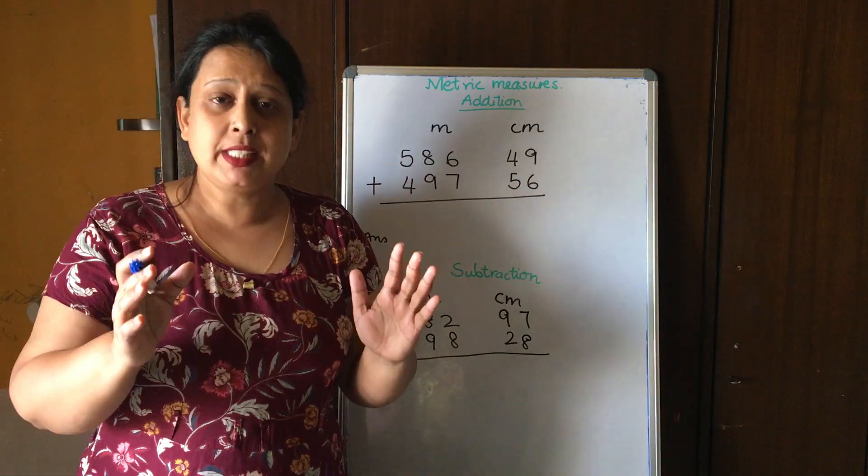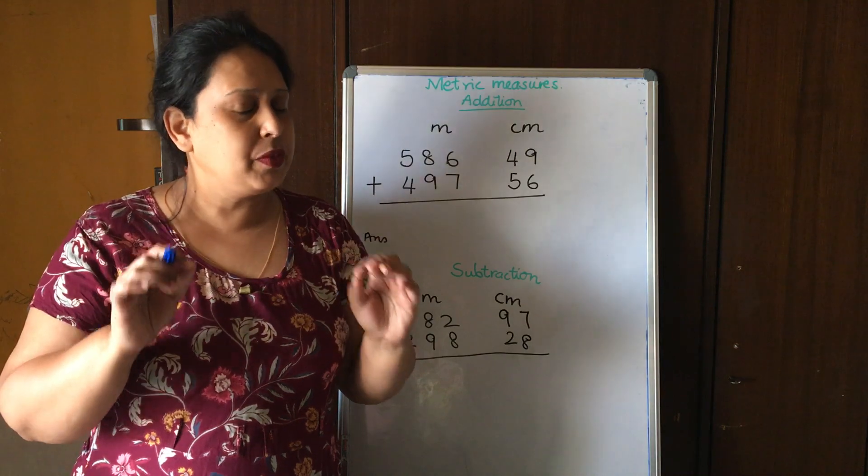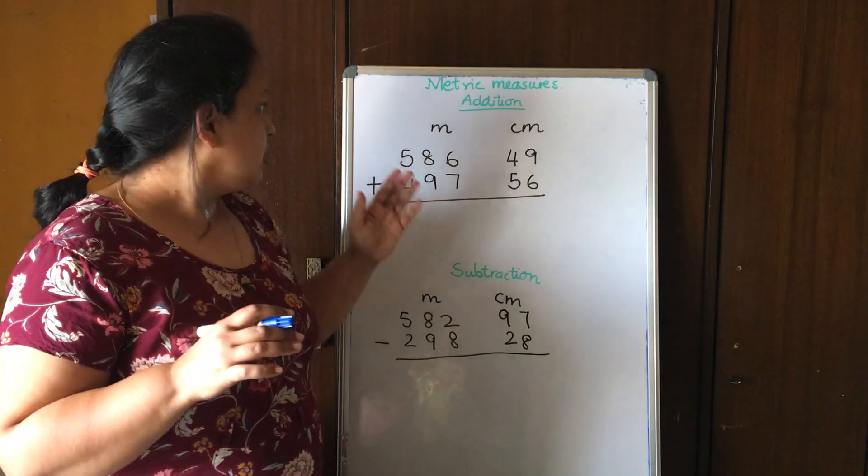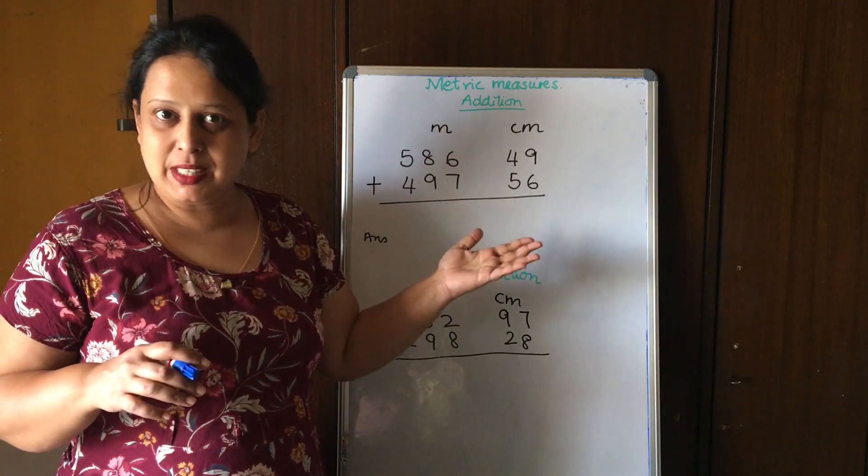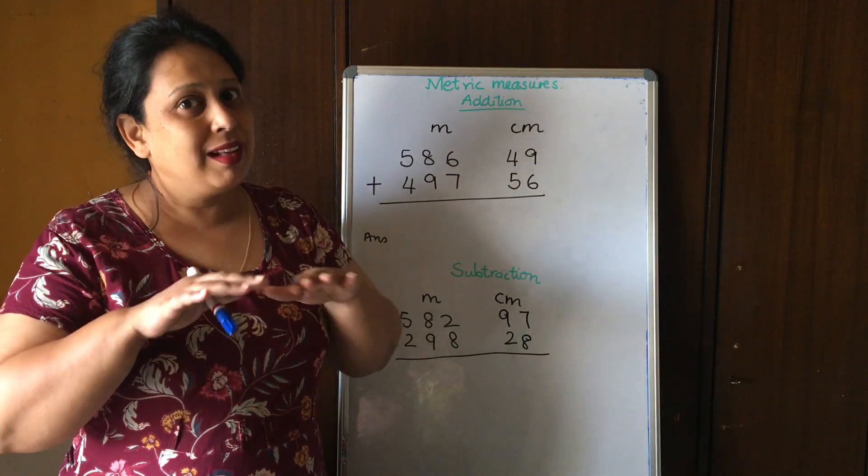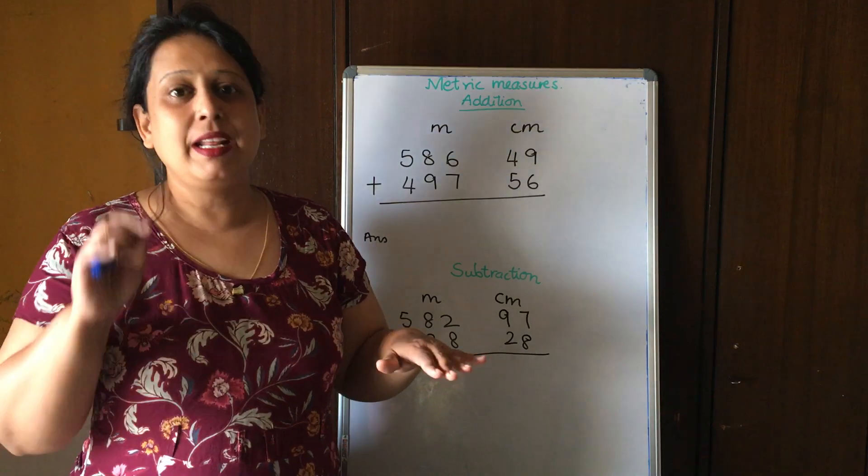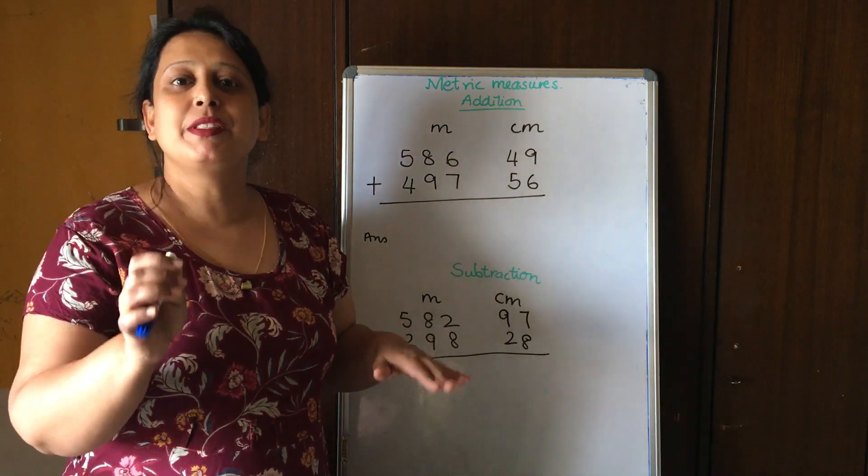So the basic concept of addition and subtraction is very clear with you. Just the thing is that we put meters and centimeters, or we put rupees and pesi. But the bottom line is that the principle is the same.